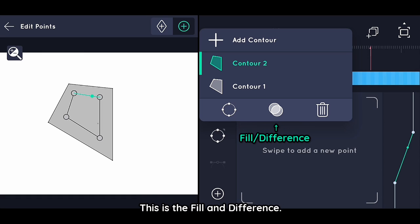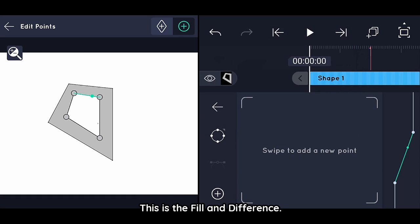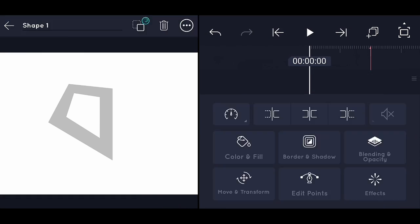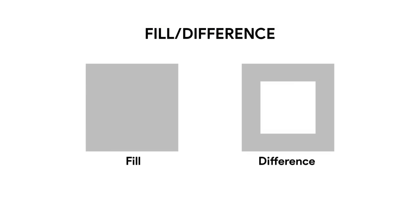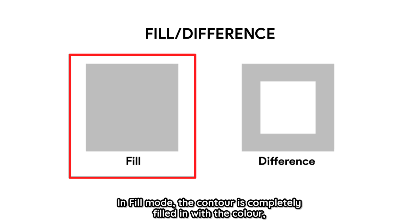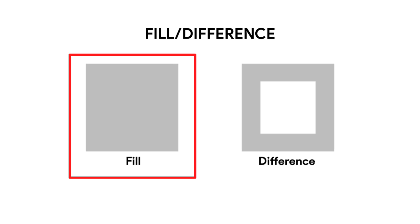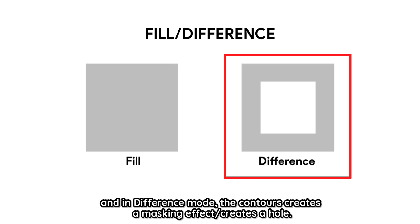This is Fill and Difference mode. In Fill mode, the contour is completely filled in with the color. In Difference mode, the contour creates a hole.